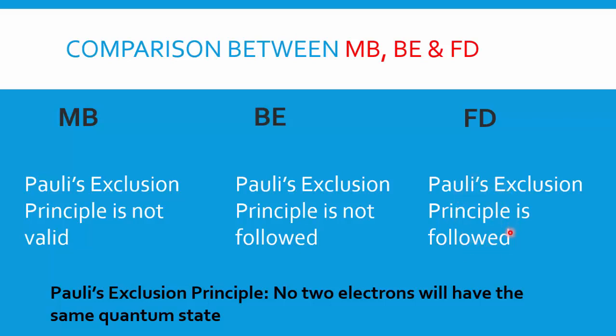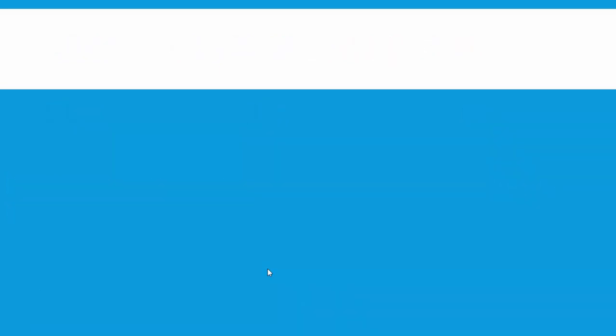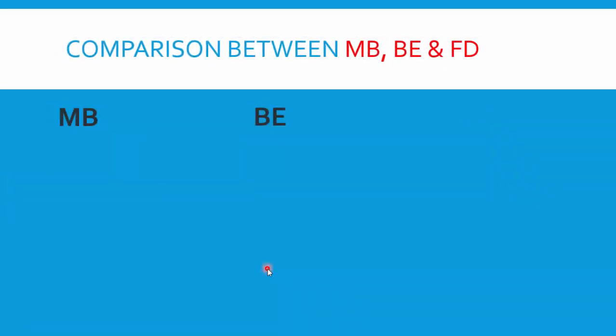This is the second criterion that explains why it is necessary to classify indistinguishable particles into BE and FD. Pauli's exclusion principle classifies these particles: indistinguishable particles that follow it go to FD, and those that do not follow it go to BE. For Maxwell-Boltzmann statistics, with ideal gas molecules, Pauli's exclusion principle cannot be applied, so it is not valid there.